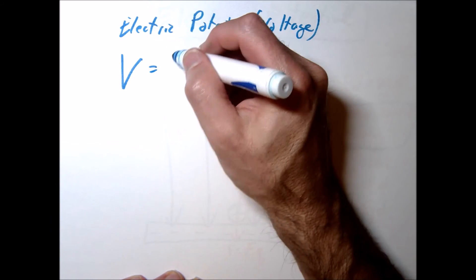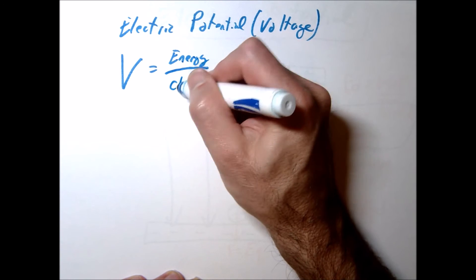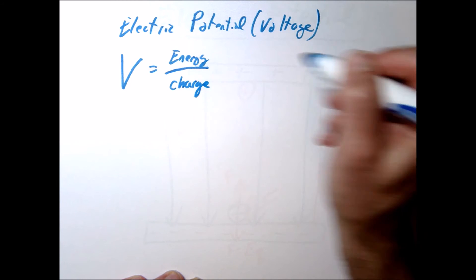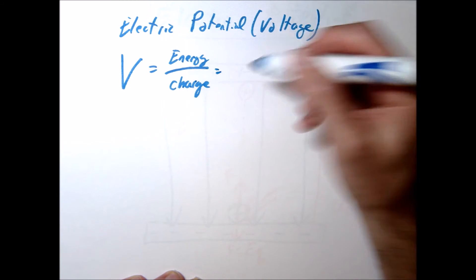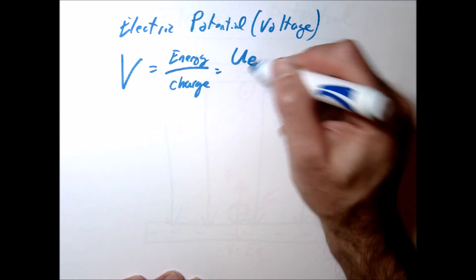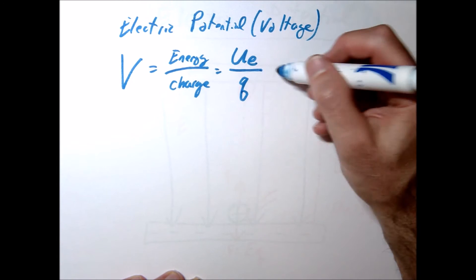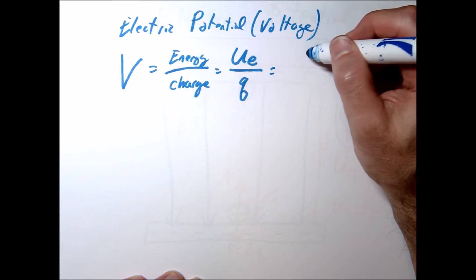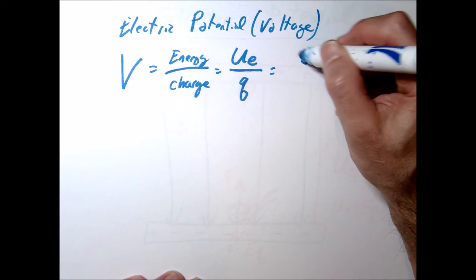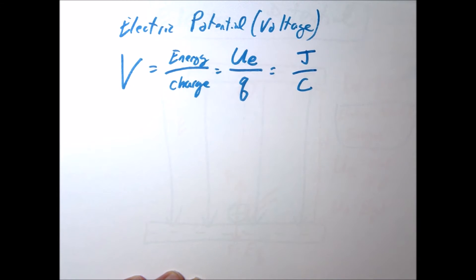And V basically is telling us how much energy per charge, or the amount of potential energy, electric potential energy per charge. Sometimes it's easiest to think about this when we look at the units. So we have a joule per coulomb, energy per charge, joule per coulomb.